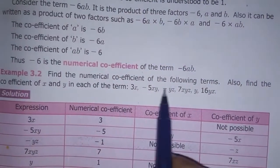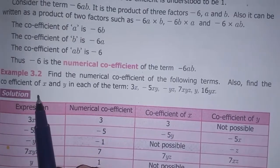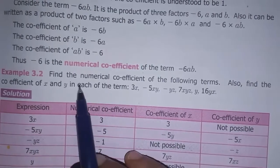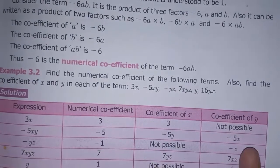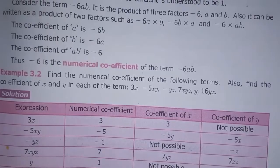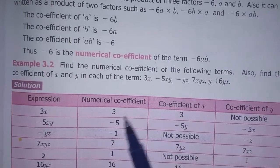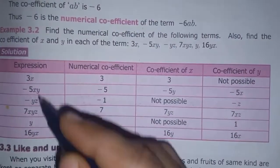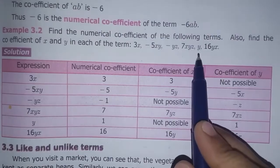Next example: Find the numerical coefficient of the following terms. Also find the coefficient of x and y in each of the terms. We will use a tabular column with the terms: 3x, minus 5xy, minus yz, 7xyz, y, and 16yx.